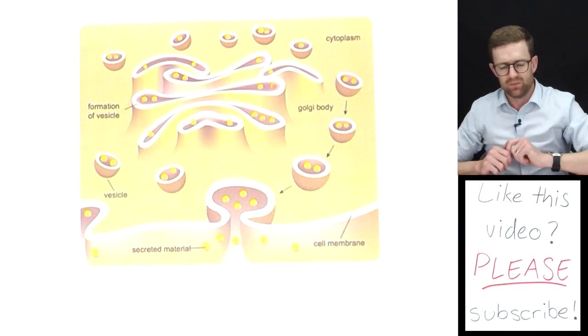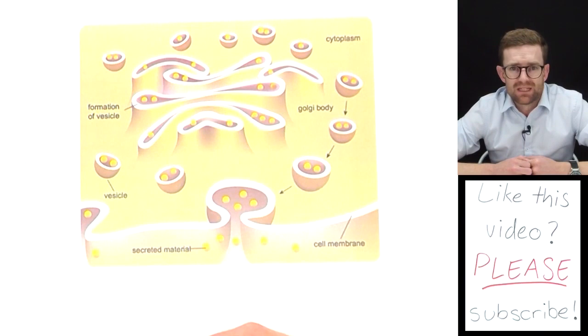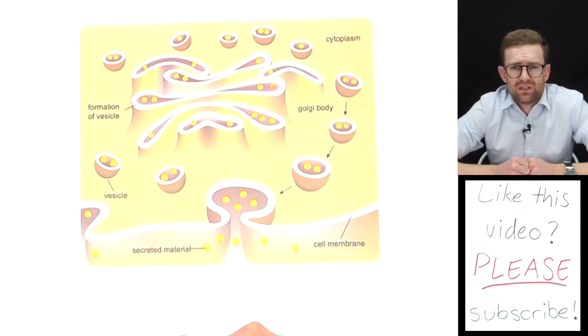A great example of exocytosis in action is the cells of your salivary glands. Quite often if we smell or anticipate a delicious meal, we'll start to salivate and that's a result of the process of exocytosis happening inside those cells in our salivary glands, producing and then secreting saliva by exocytosis. Another example is the cells of the endocrine glands that produce and secrete hormones which travel around our body as chemical messages.